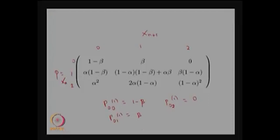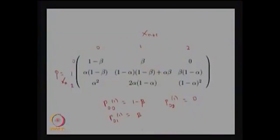Similarly, for P(2,0): at the nth step 2 machines are working, and at the n+1th step 0 machines are working — meaning both machines failed on the same day. Therefore that probability is alpha times alpha, or alpha squared. You can visualize the other elements in the same way.